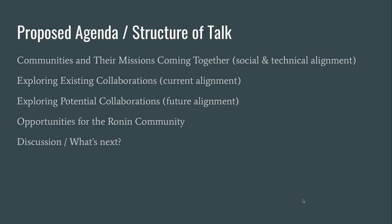The structure of the talk is: we will look at how communities can come together via social and technical mechanisms. We will explore how existing collaborations can be first detected and then used, and we can also look at potential new collaborations. We have based this talk on a presentation given to another community, the Open Trades Network, but we also want to highlight the opportunities for the Ronin community to take a similar approach, and then we hope for a discussion on what might come next.